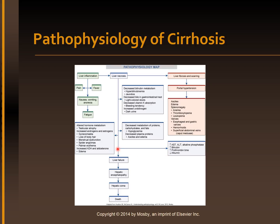Liver necrosis can also result in altered hormone metabolism, with increased androgens and estrogens in the body, and increased antidiuretic hormone and aldosterone causing edema. Liver necrosis can also result in liver failure, hepatic encephalopathy, hepatic coma, and death.